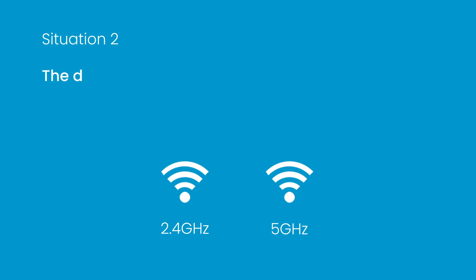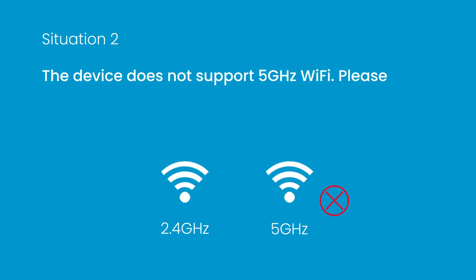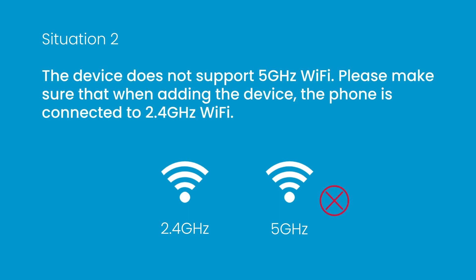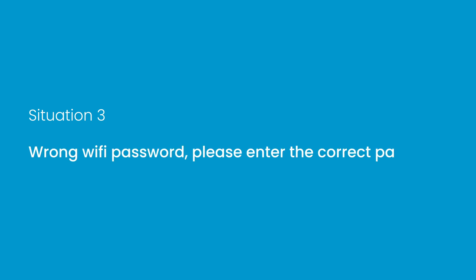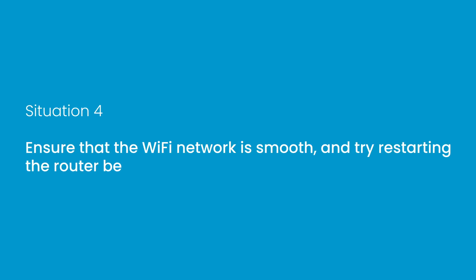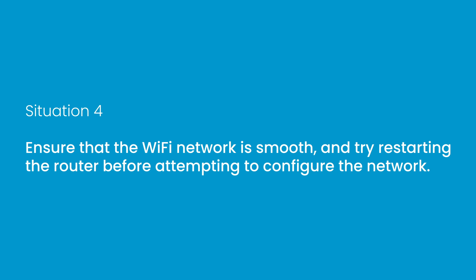Situation 2: The device does not support 5 GHz Wi-Fi. Please make sure that when adding the device, the phone is connected to 2.4 GHz Wi-Fi. Situation 3: Wrong Wi-Fi password — please enter the correct password. Situation 4: Ensure that the Wi-Fi network is smooth and try restarting the router before attempting to configure the network.